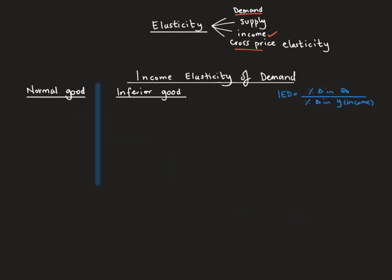A normal good is easy to understand: when income increases, quantity demanded increases; when income decreases, quantity demanded decreases. For inferior goods, when income increases, quantity demanded decreases, and when income decreases, consumption for that product increases. Normal goods are separated into two groups: necessity products and luxury products. A necessity product, like food or transport or petrol, has an elasticity between zero and one.